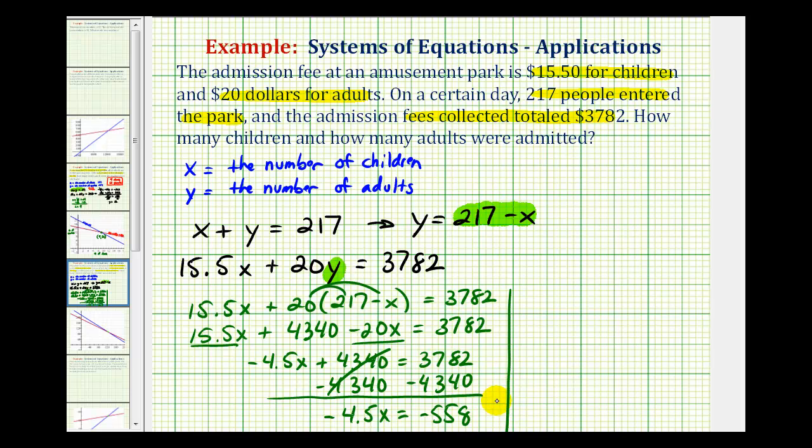Let's go ahead and finish this up here. To solve this for x, we'll divide both sides by negative 4.5. This simplifies to x, and negative 558 divided by negative 4.5 is equal to 124.